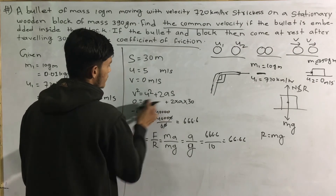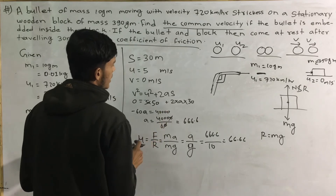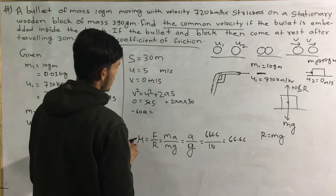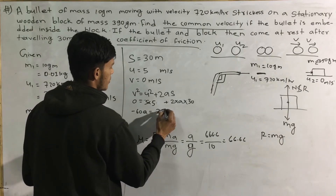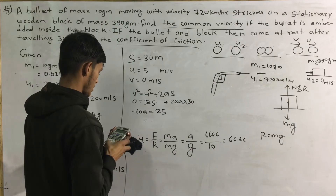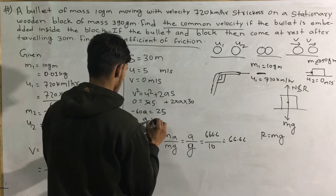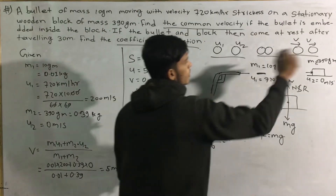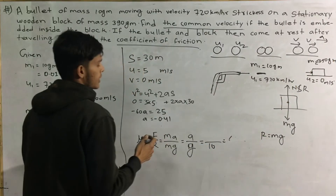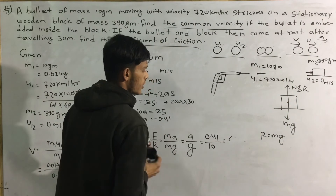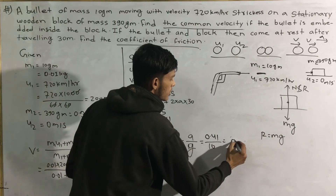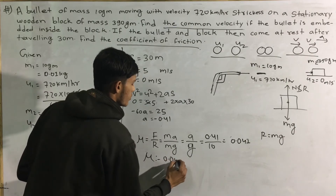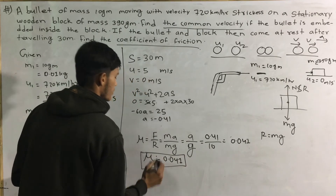I'm going to do 5 into 5 — that's five squared — and I am going to get 25, and 25 divided by 60 is equal to minus 0.41. So 0.41 is the deceleration. This is minus u. 0.41 divided by 10 equals 0.041. This is the coefficient of friction.